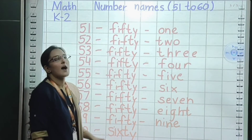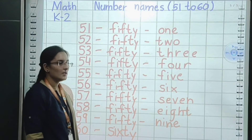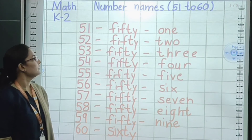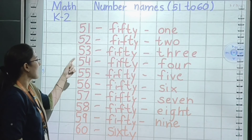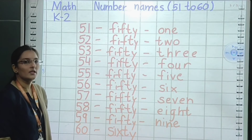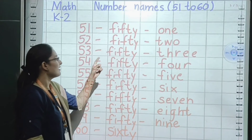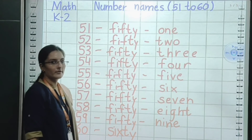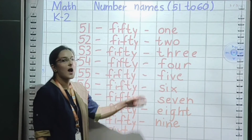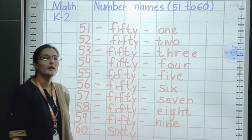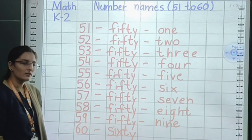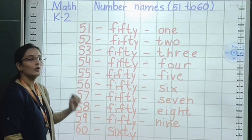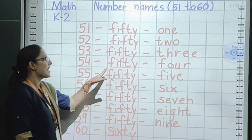After that, this number will come: 60. Small sleeping line. And here all letters should be small. S, I, X, T, Y — sixty. So 60 is sixty.